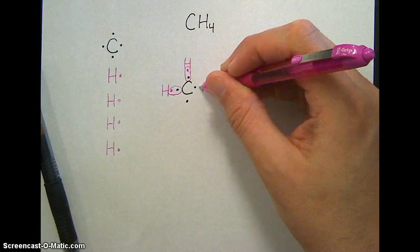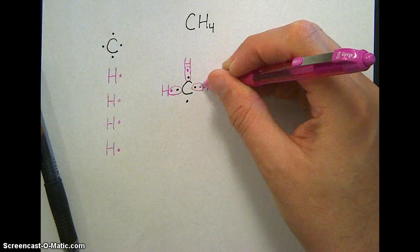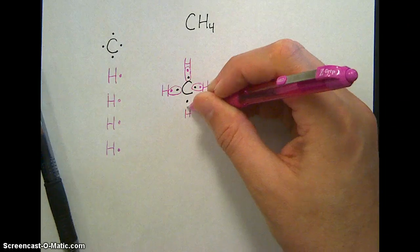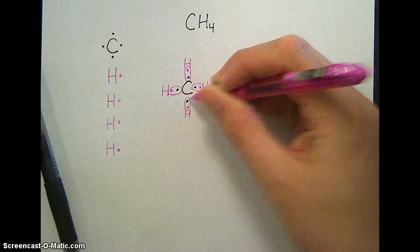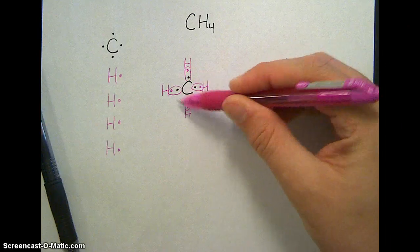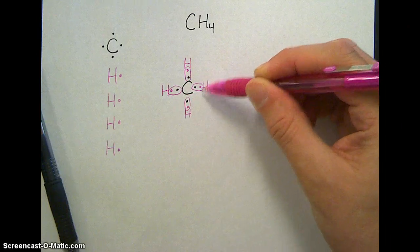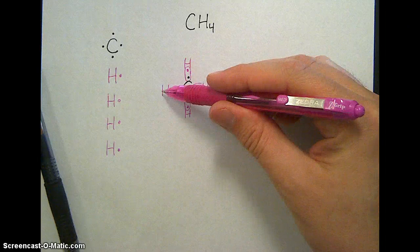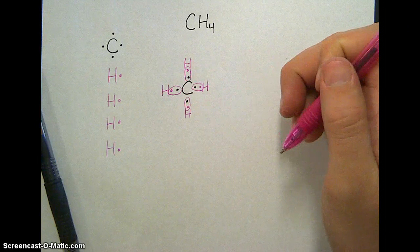This hydrogen will share from this side. The end result is that the carbon now has access to eight electrons some of the time, and each hydrogen has access to two electrons some of the time, making it more stable.